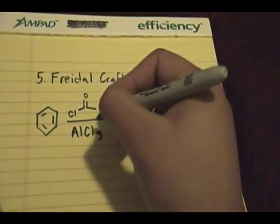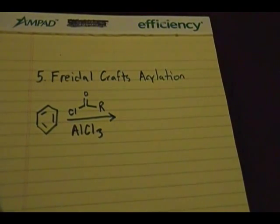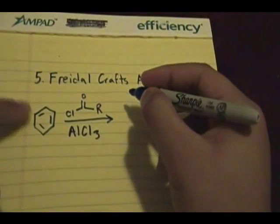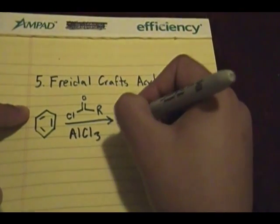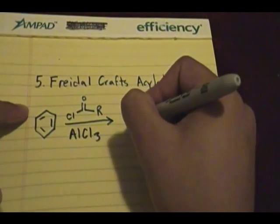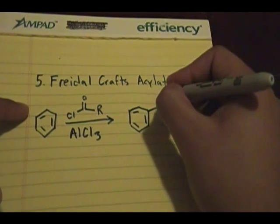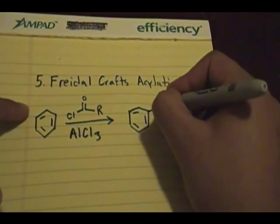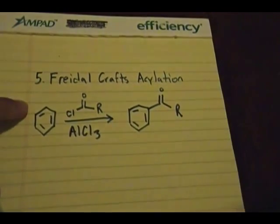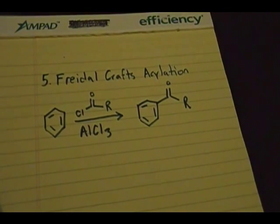The reagents are this acyl group and AlCl3. You could also have Br and use AlBr3. The product of this reaction is your aromatic ring with a ketone-type product — and that's basically your Friedel-Crafts acylation.